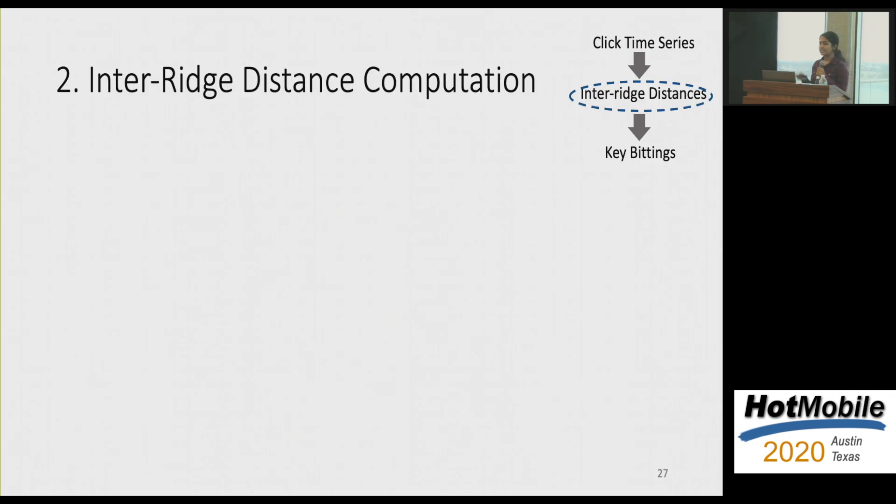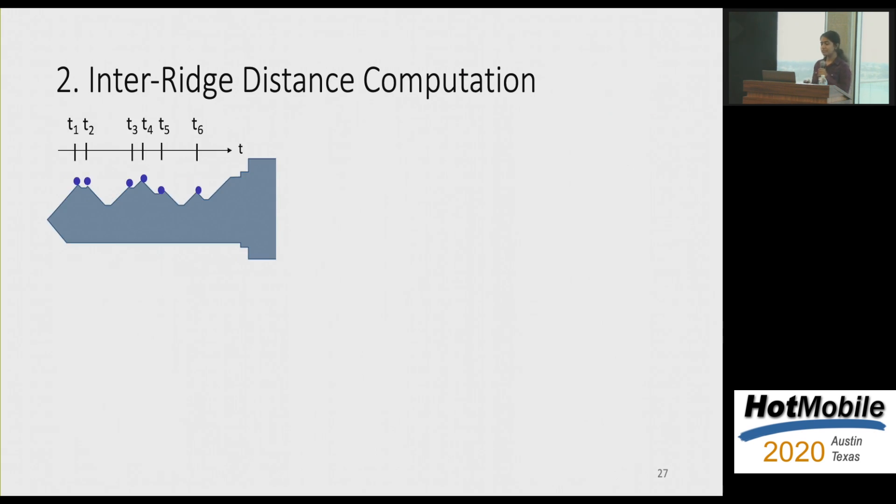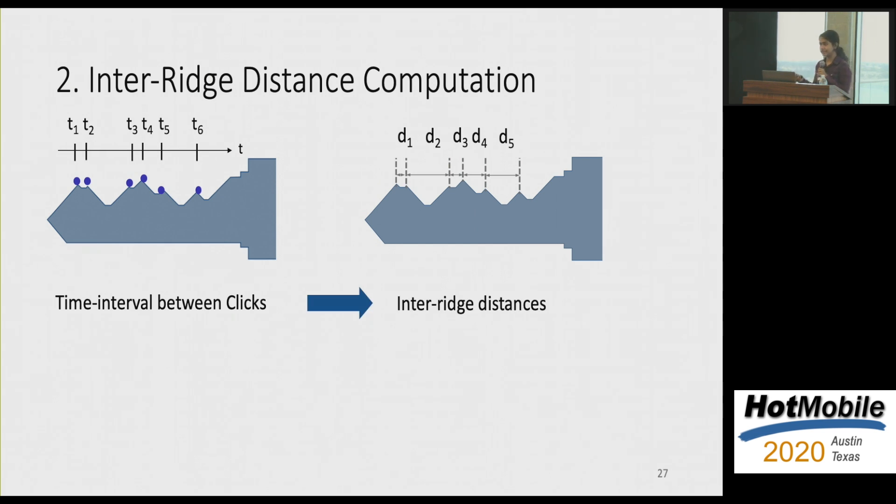So now that we have this, let's try to see how we can infer something about the key, which is the inter-ridge distance. So the information that we really have is the time at which the pin strikes the different ridges. And what we really need is the distance between these ridges in the key. Okay, so clearly you can kind of see a mapping between the time interval between clicks and the distance between ridges. And they're kind of related by a simple distance equals speed times time interval formula. Okay, one key thing to observe here is that we have an assumption that the insertion speed of the key itself is consistent. However, we don't expect to be knowing that value, and we can actually compute the speed, which I will be skipping for time constraints.